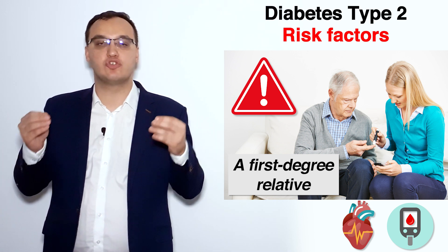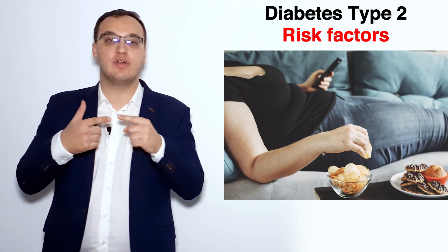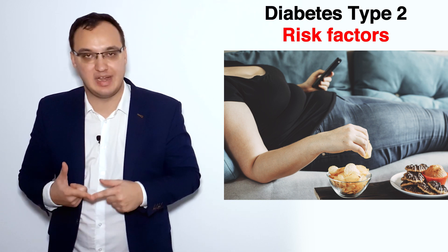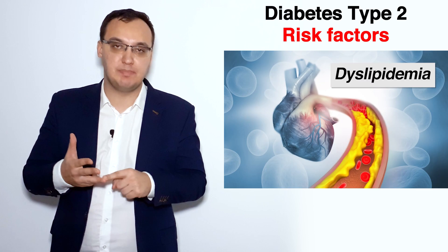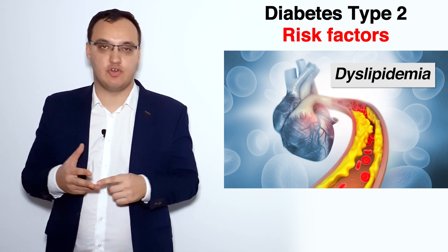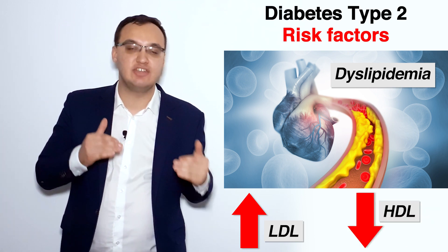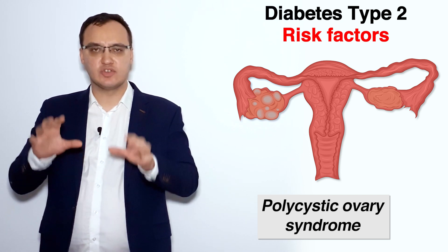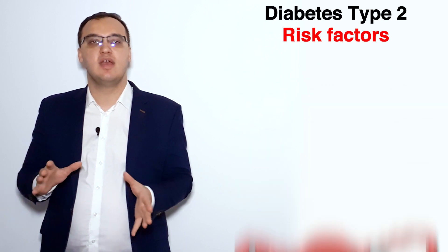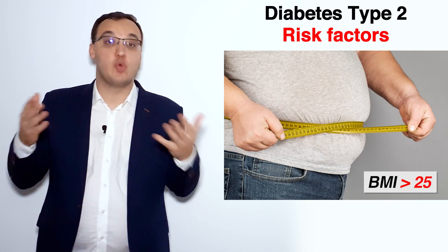We want to prevent diabetes, so if you have relatives, then go early on. Also if you are living a very sedentary lifestyle, if you have hypertension, dyslipidemia — meaning your lipids are high, for example high LDL cholesterol or very low HDL cholesterol — and if you have polycystic ovary syndrome. These are the main risk factors. There are many others, such as obesity, for example a BMI of more than 25.